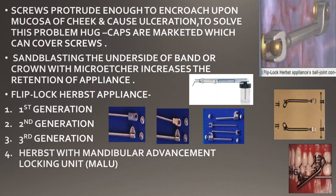Another modification: the screws protrude enough to encroach upon the mucosa and cause ulceration of the cheek. To prevent this, hub caps are marketed which can cover the screws, preventing ulceration. Another modification is sandblasting the underside of the band or crown with a micro etcher, which provides precise surface micro-roughening and increases the bond strength by 400%, thereby increasing the retention of the appliance.